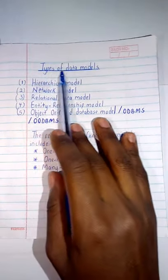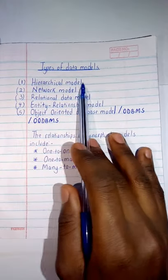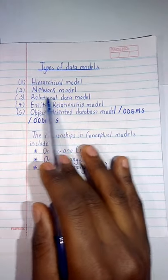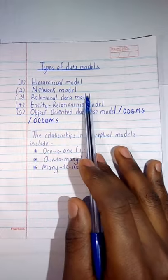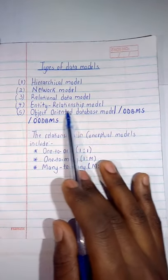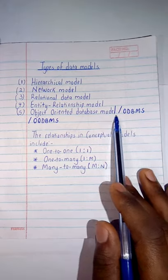Then now we are having types of data models: we are having hierarchical model, then a network model, relational data model, entity relationship model, then object-oriented database model which you can call ODBMS or OODBMS.